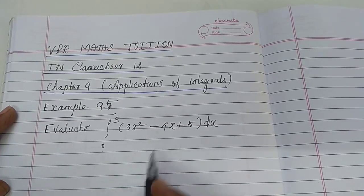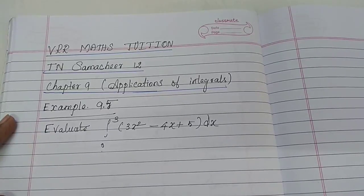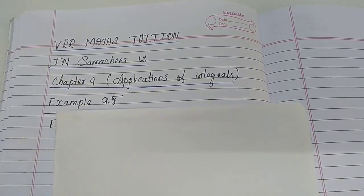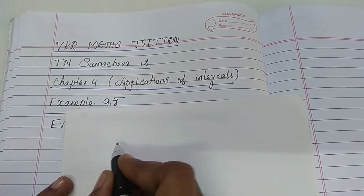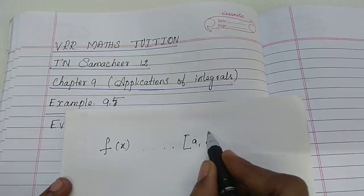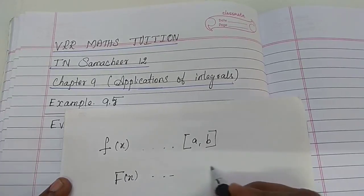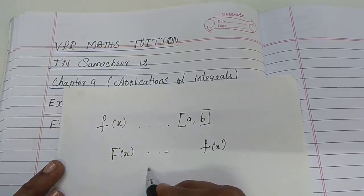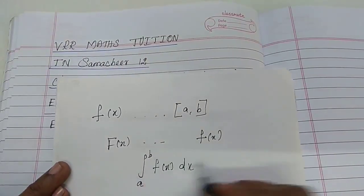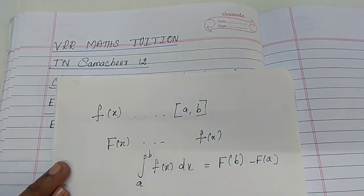Comparing this method to the limit formula, the 2nd Fundamental Theorem of Integral Calculus is easier. The theorem states: if small f(x) is a continuous function on the closed interval [a, b], and capital F(x) is an anti-derivative of f(x), then the integral from a to b of f(x) dx equals F(b) minus F(a).